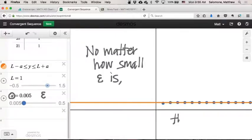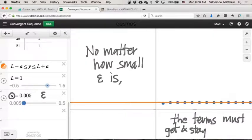the terms of the sequence, and when I say terms, I mean the y values of these points, right, the values of the a sub n's, the terms must get to and stay within epsilon of the limit. And that's the intuitive notion of what the definition of convergence is.